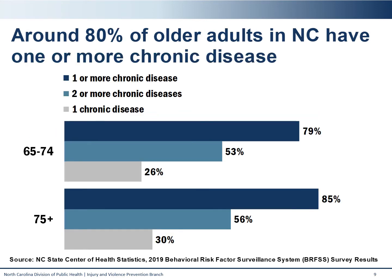This slide shows the proportion of older adults that have a chronic disease. Close to 80% of the older population in North Carolina identifies as having one or more chronic conditions. Further, we see over 50% of older adults identify as having two or more chronic diseases. Having multiple chronic conditions is a known risk factor for falling.